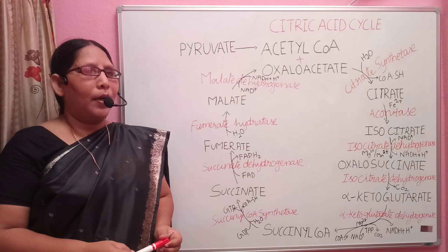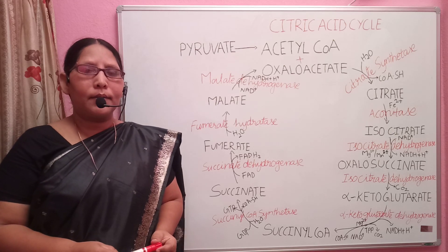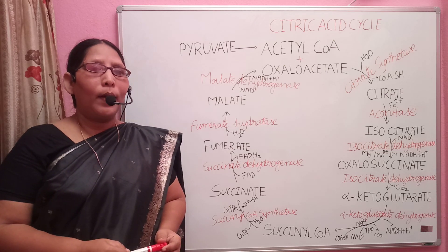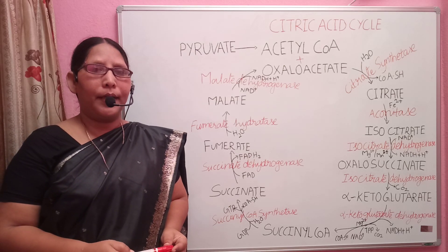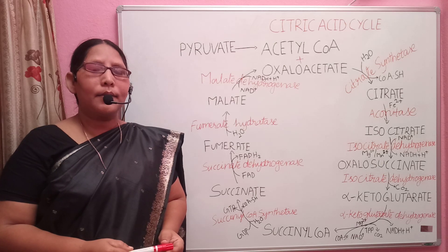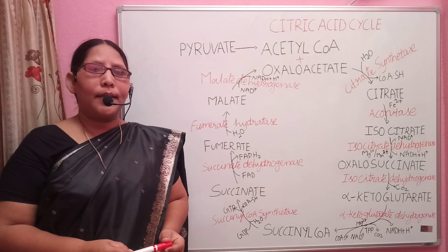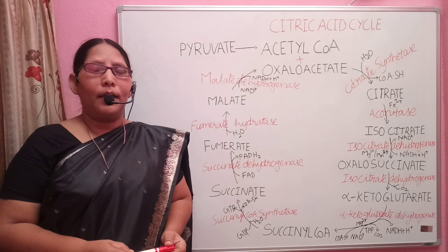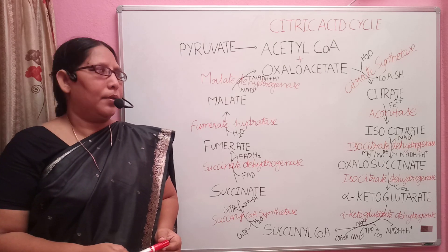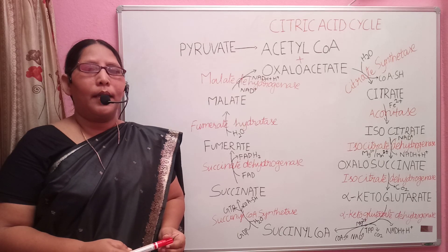From citrate, isocitrate is formed. This reaction involves two steps. In the first step, citrate is converted to aconitate, involving a removal of water, that is, a dehydration reaction. From aconitate, isocitrate is formed in the second step by the addition of water, which is called rehydration. So the conversion from citrate to isocitrate involves dehydration and rehydration. It also requires ferrous ions. The entire reaction is catalyzed by the enzyme aconitase.